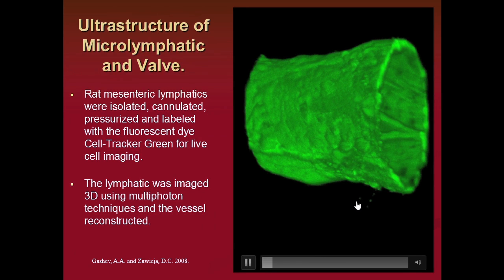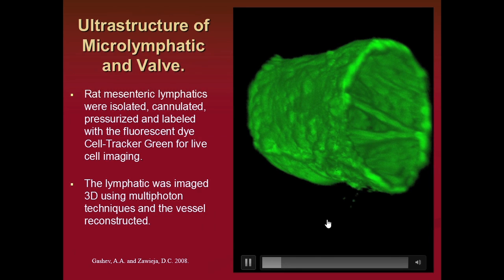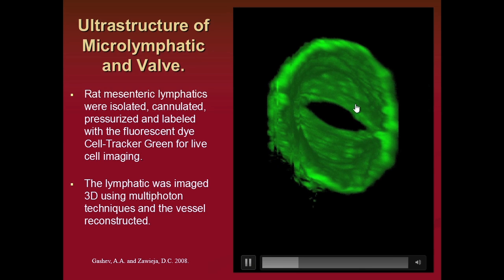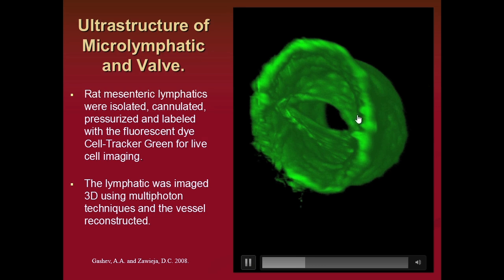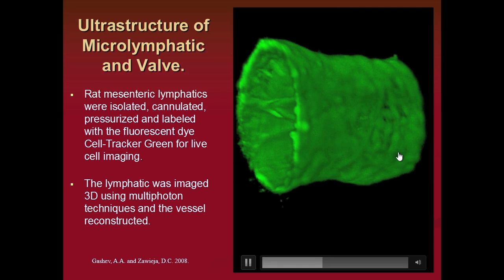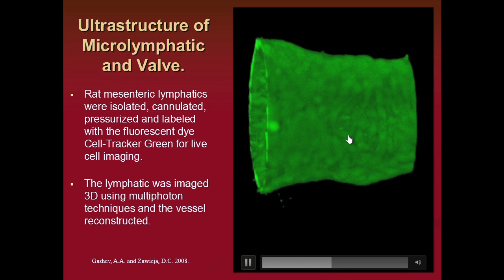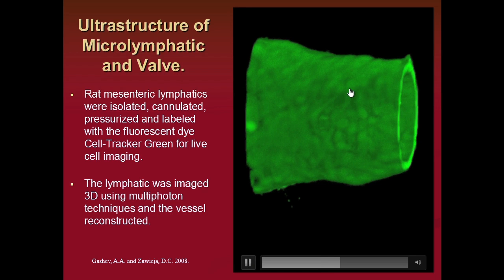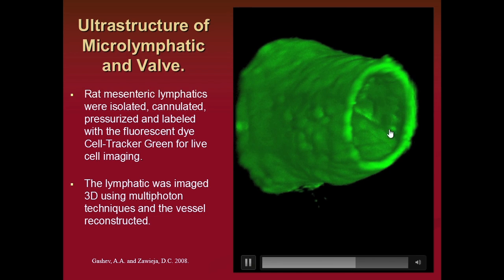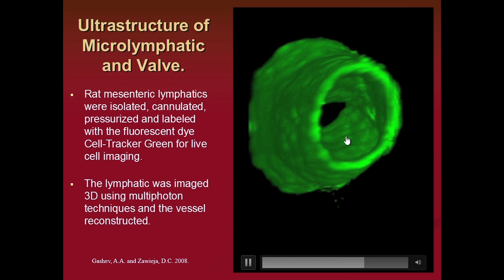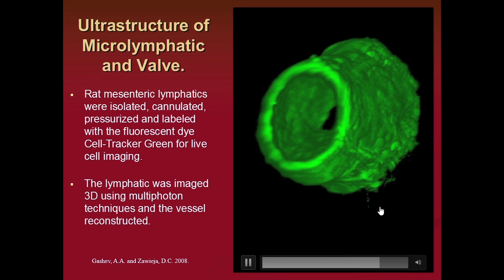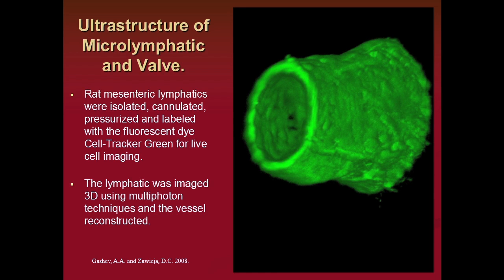This is a rat mesenteric lymphatic taken out, cannulated, loaded with cell tracker green, and confocally imaged. What you're seeing is a three-dimensional reconstruction showing the valves — you're on the central end with lymph squirting out of the screen. These are the semi-lunar valves that open and close throughout the lymphatic cycle. The vessel wall is blurred out purposely to show it as a solid structure. Looking down the input end, you can see the valve leaflets, the nuclear bumps where endothelial cell nuclei are, and the open lumen. These valves are very, very effective — it takes only a centimeter of water or less to open and close them, and they're biased in the open position.